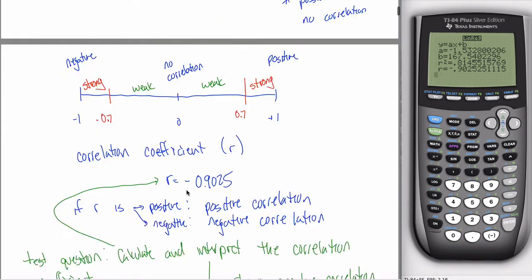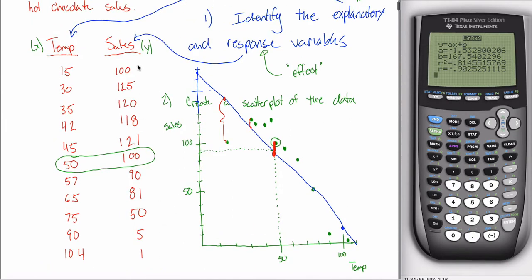The more formal interpretation: if you consider sales as a single variable and go all the way back to the first chapter where we talked about a single variable — the mean, median, standard deviation, interquartile range — we could talk about the average number of sales. Maybe the average is somewhere in the 80s. But it wasn't 80 on all days — it's quite different. On some days it's really high, on some days really low. There's a lot of variance associated with the variable sales.